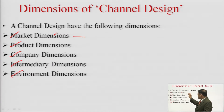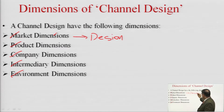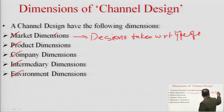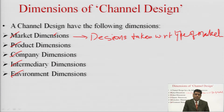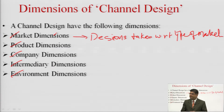Market dimensions are all those decisions taken with respect to the type or nature of the market. For example, if the market is full of competitors — a highly competitive market — then the company can adopt a different type of channel strategy. Market dimension covers all the decisions which are taken after looking at the nature of the market.